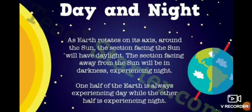We saw yesterday that the earth rotates around its own axis. Now what happens when the earth rotates around its axis? One part of the earth faces towards the sun and the other part of the earth will be away from the sun. That is what I have shown in this picture.